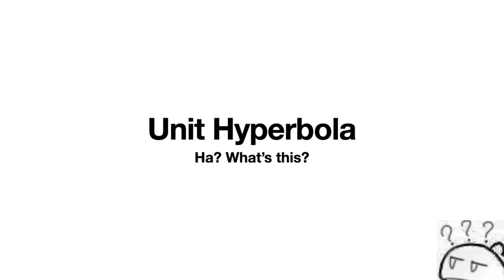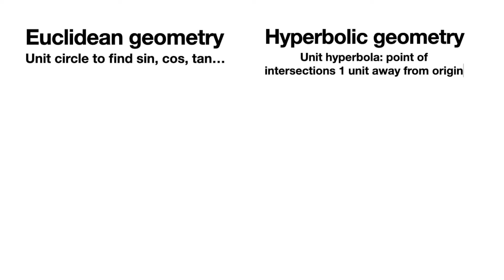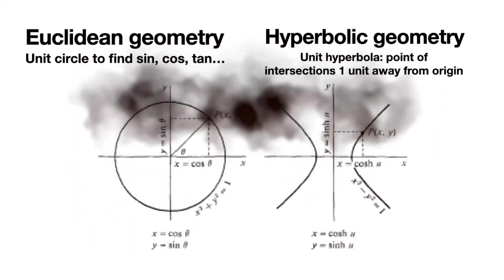Now we'll be explaining what is a unit hyperbola. One major difference between hyperbolic and Euclidean geometry is that hyperbolic geometry doesn't use the unit circle to determine the value of hyperbolic sine, hyperbolic cosine, and tangent. Instead, it uses a unit hyperbola - that is to say, the intersections of the hyperbola are both one unit away from the origin.